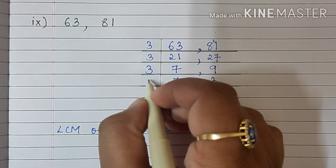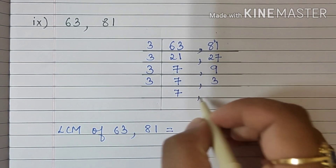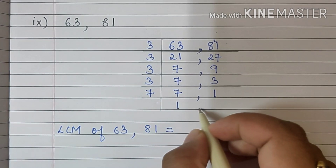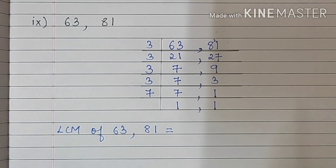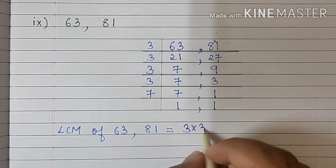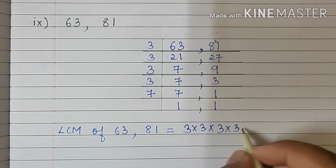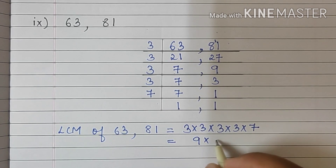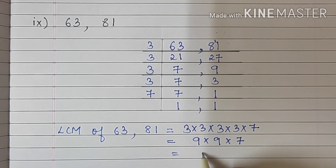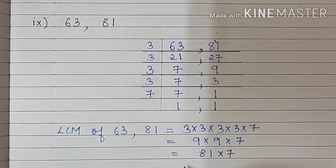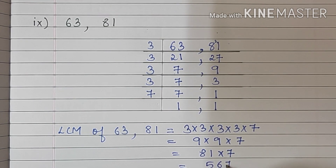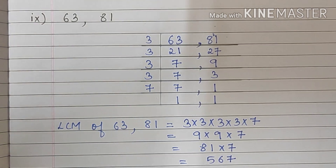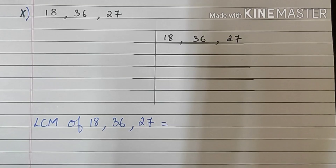Again 7 will come down as it is. So we will write here 3. 3 1s are 3. Now 7 is remaining, so we will write here 7. 7 1s are 7 and 1. So let's multiply the factors. 3 3s are 9, 3 3s are 9, 9 9s are 81 into 7. 81 into 7 is 567. So the LCM of 63 and 81 is 567.